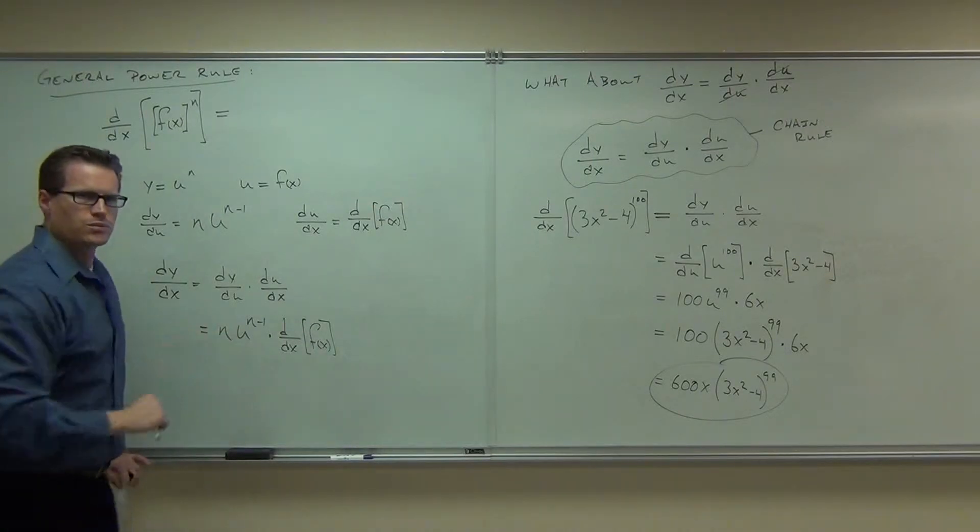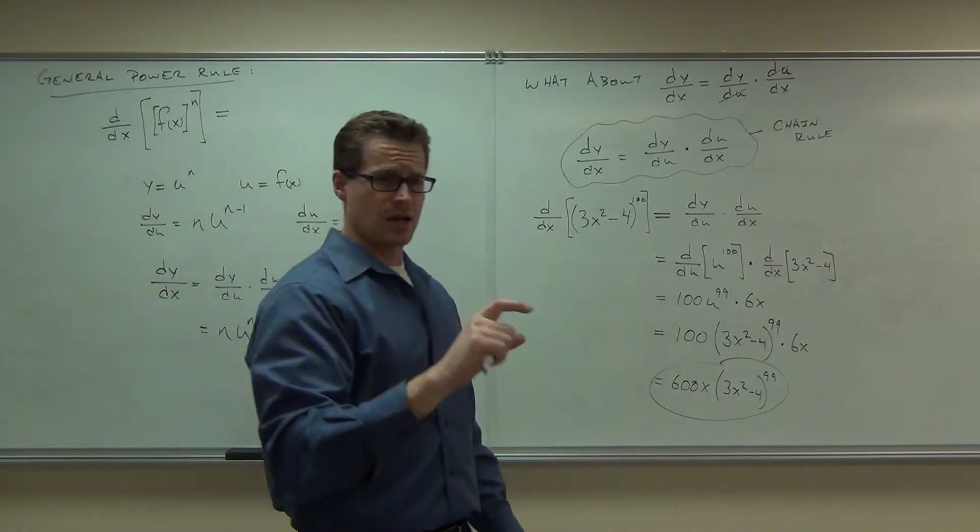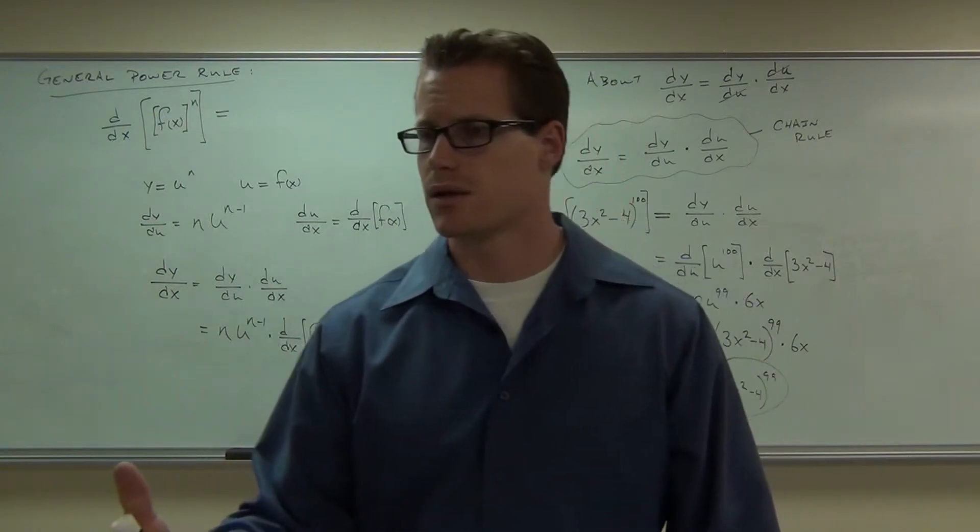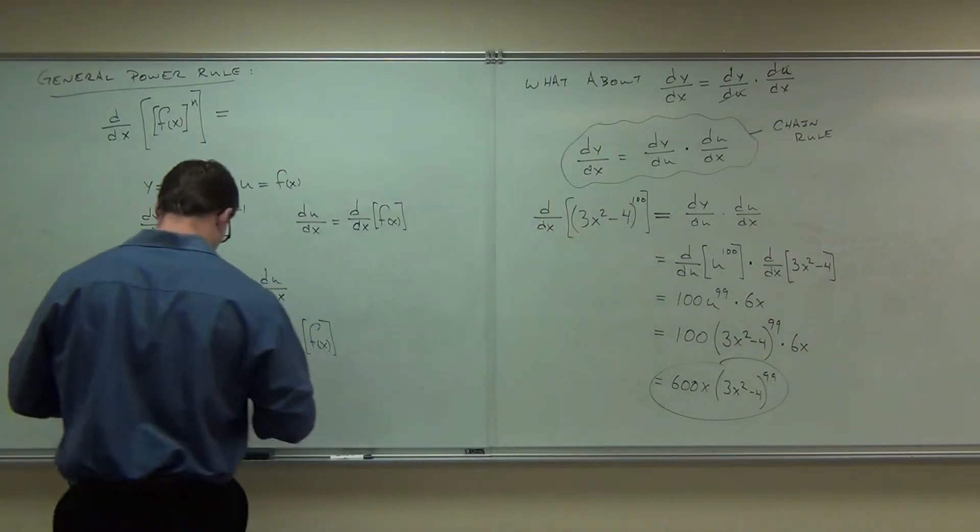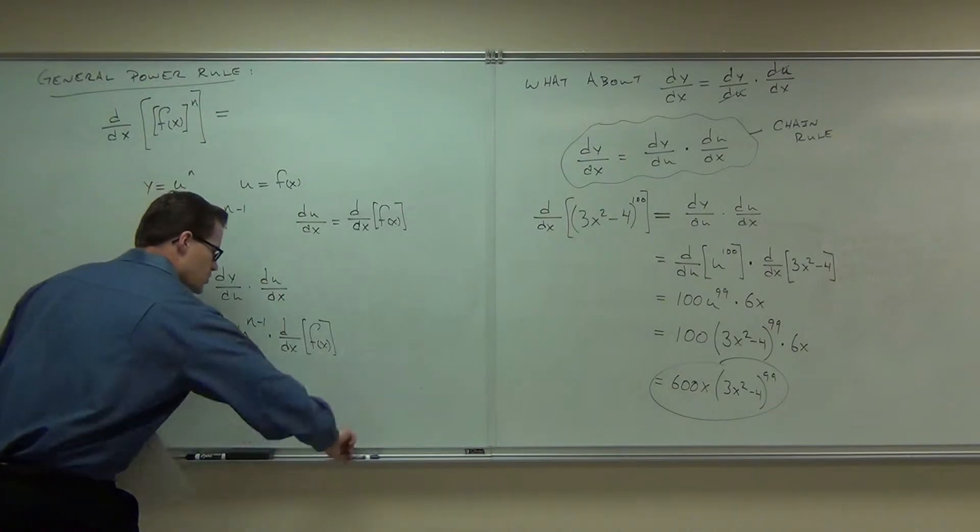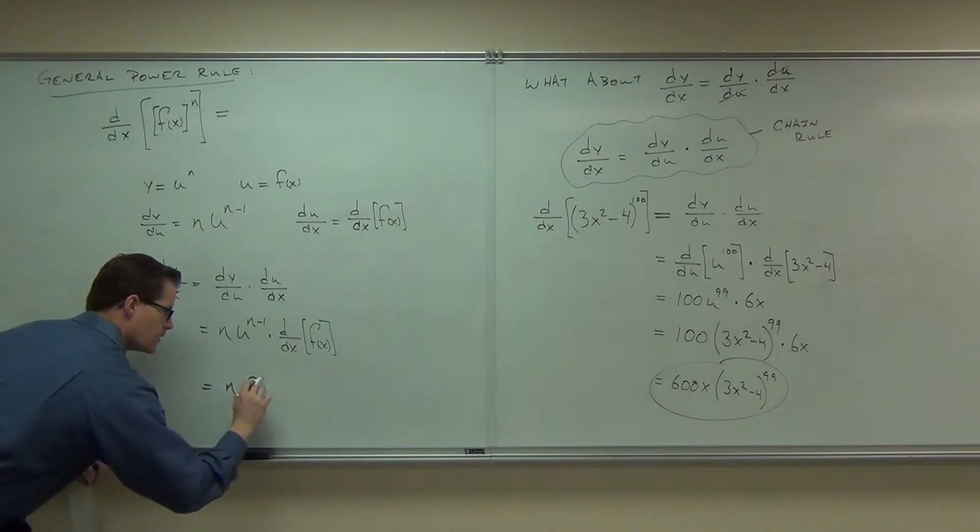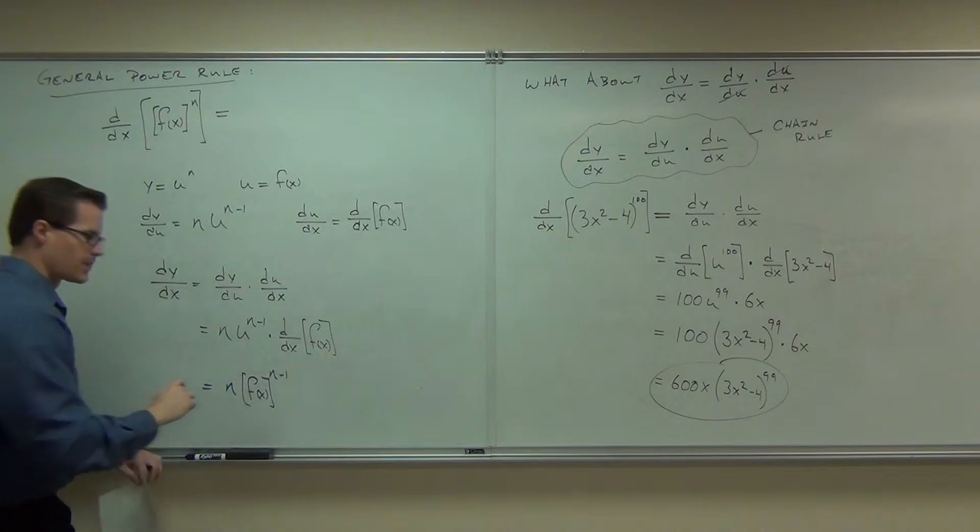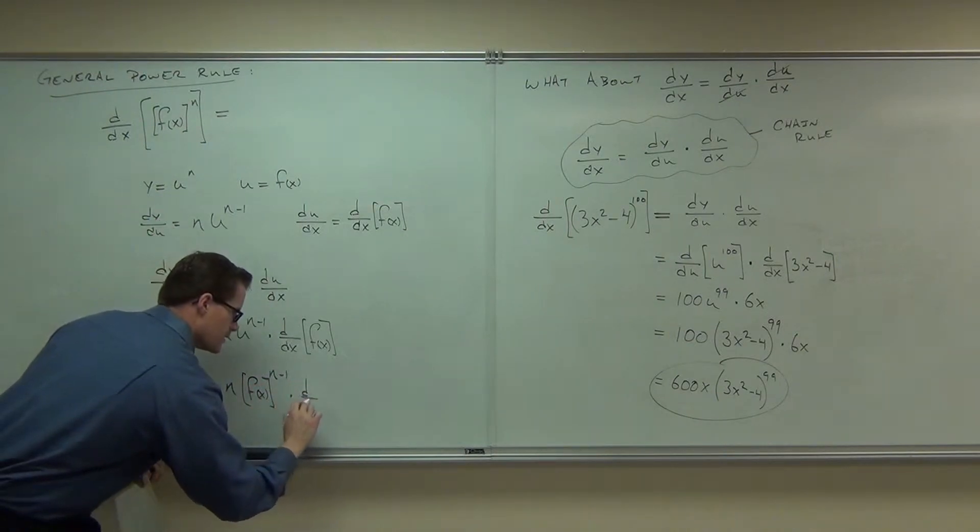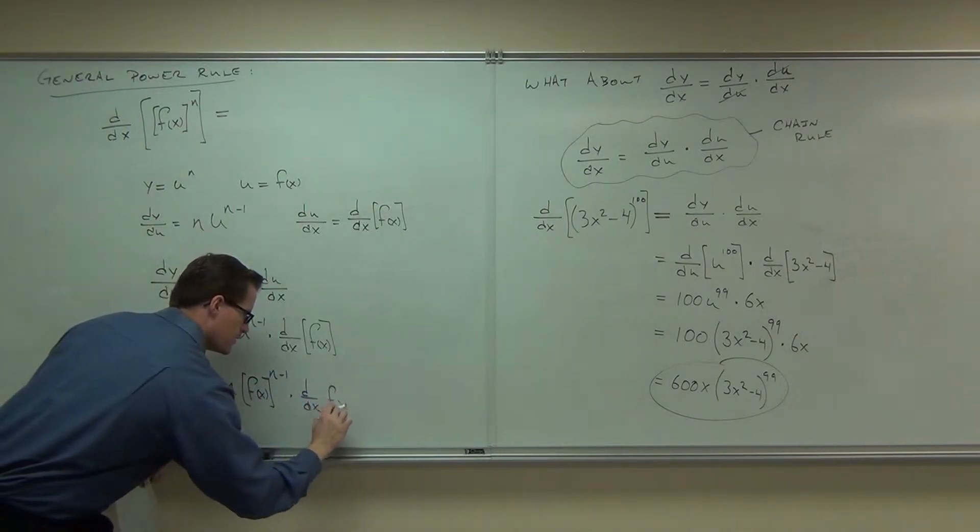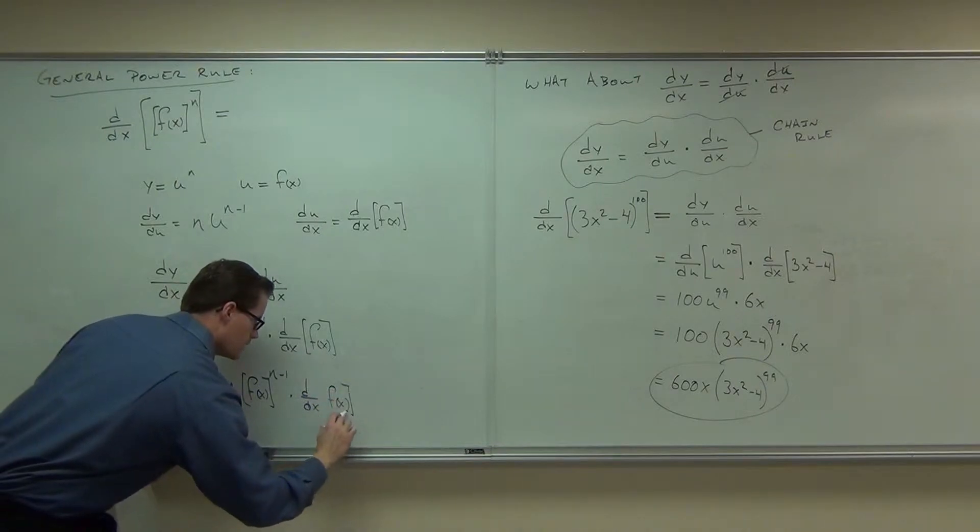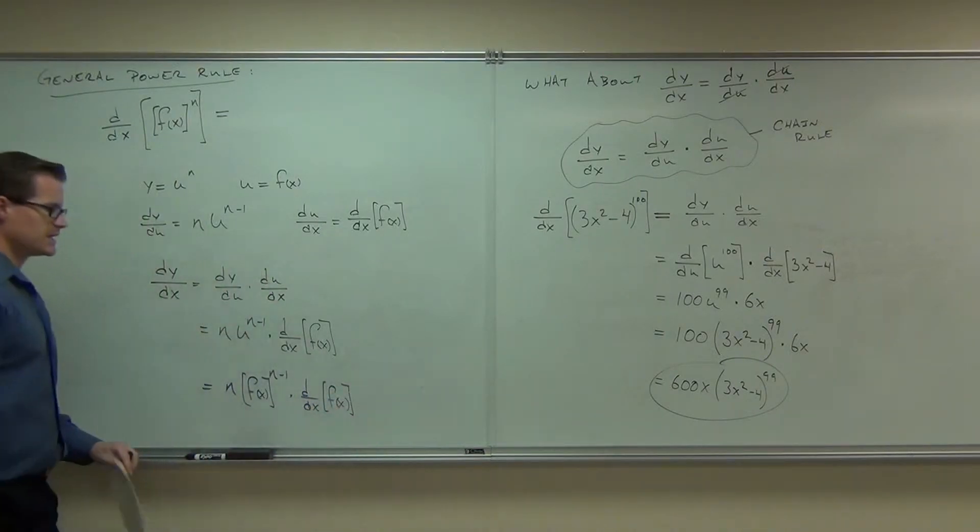How much is u? What's u equal to? Because we did that composition. What was u in our case? So do that substitution back in there, and what you end up getting is n f of x to the n minus 1 times the derivative of f of x.